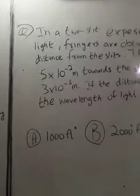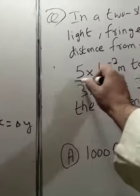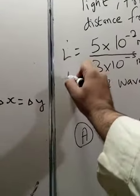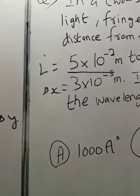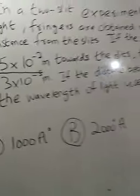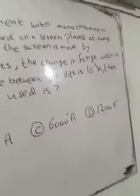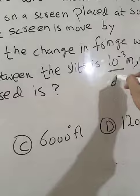The screen is moved by 5 into 10 power minus 2 meter. This will be capital L. The change in fringe width is del x or del y. If the distance between the slits, this is the small d, the small d means the distance between the slits.